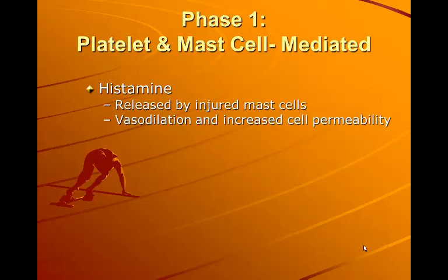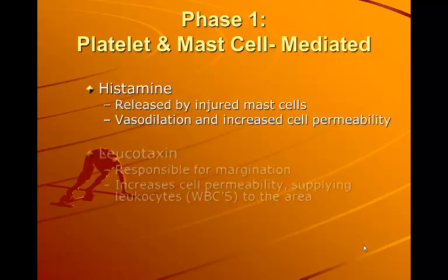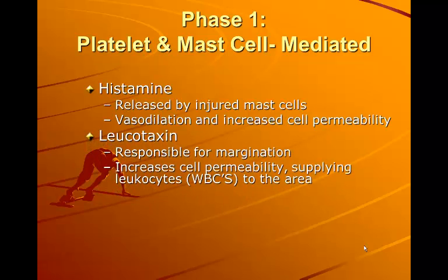Platelet and mast cell mediated: histamine is released by injured mast cells. It creates vasodilation and increased cell permeability, allowing fluid to pass through the vessels more easily. Leukotaxin is responsible for margination — it increases cell permeability and supplies leukocytes to the area.